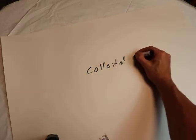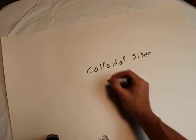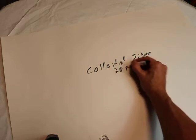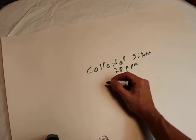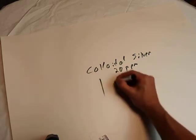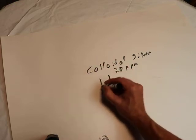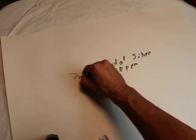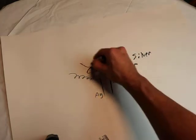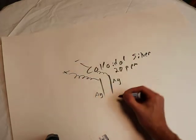We are making colloidal silver at 20 parts per million. To do so, there are a few basic steps. It takes two silver plates, both made of silver (Ag), and we connect two wires, one with a positive charge and one with a negative charge.